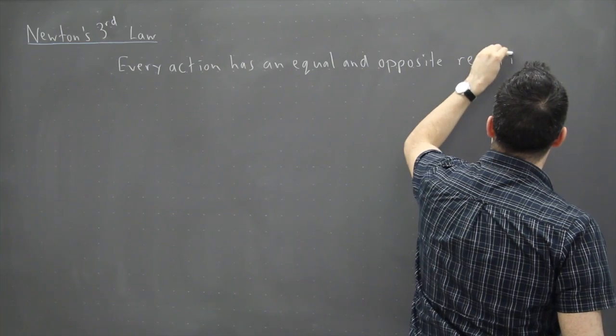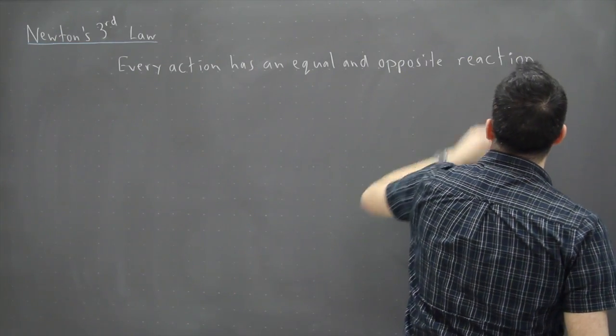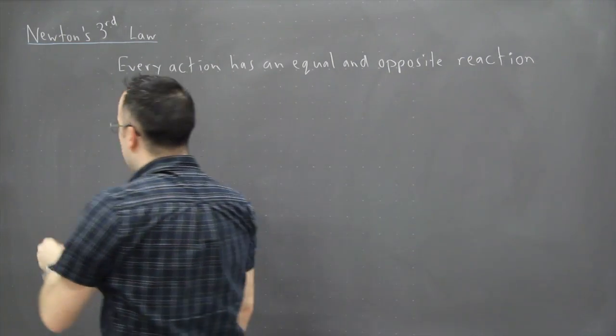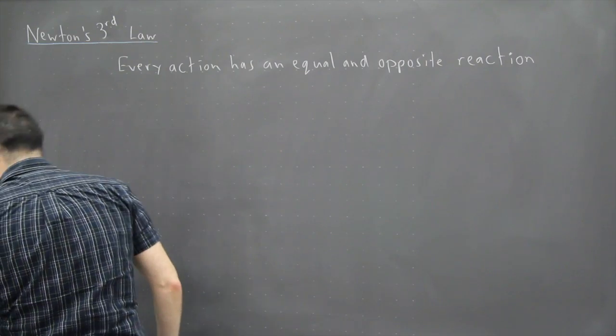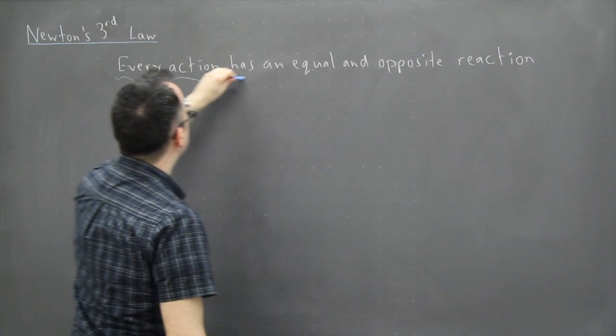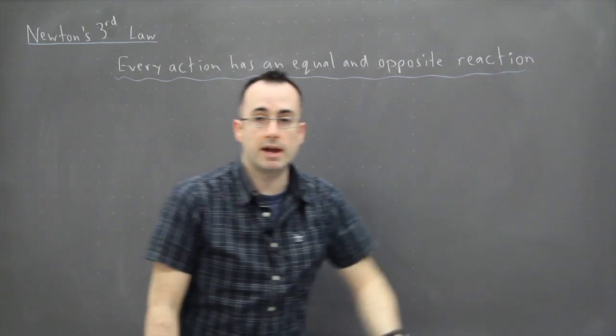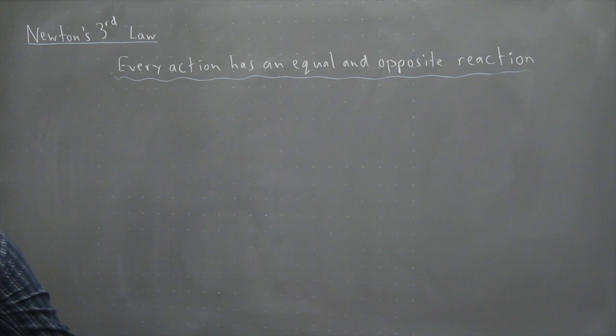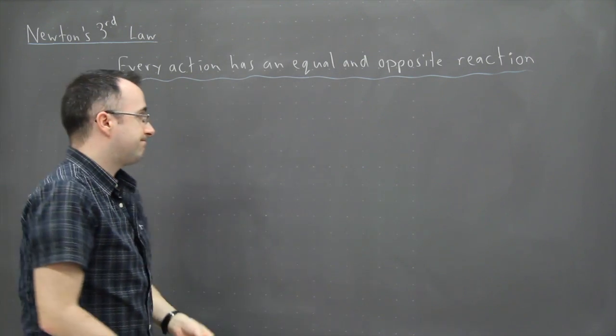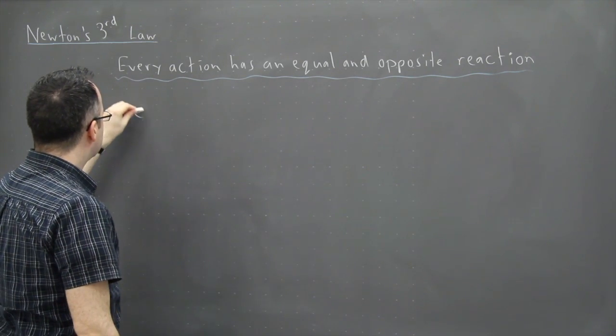So let's just write it: every action has an equal and opposite reaction. That's the key thing here. Now you have to understand what an action is and a reaction, but basically those are just forces. So here this is Newton's Third Law. Every action has an equal and opposite reaction. Now I think this is explained very well with some examples.